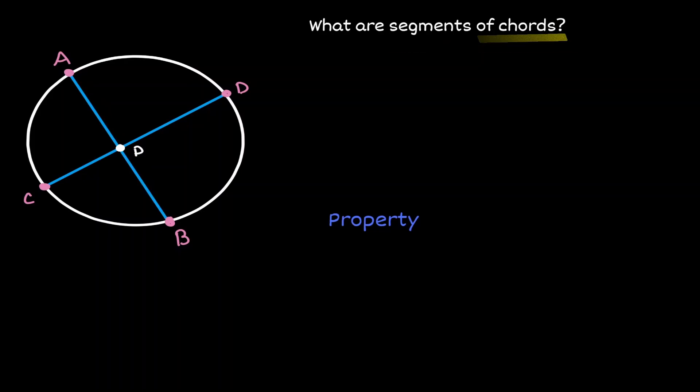And the same occurs in the chord CD. Notice that the intersection cuts this chord into pieces, line segment CP and line segment PD.